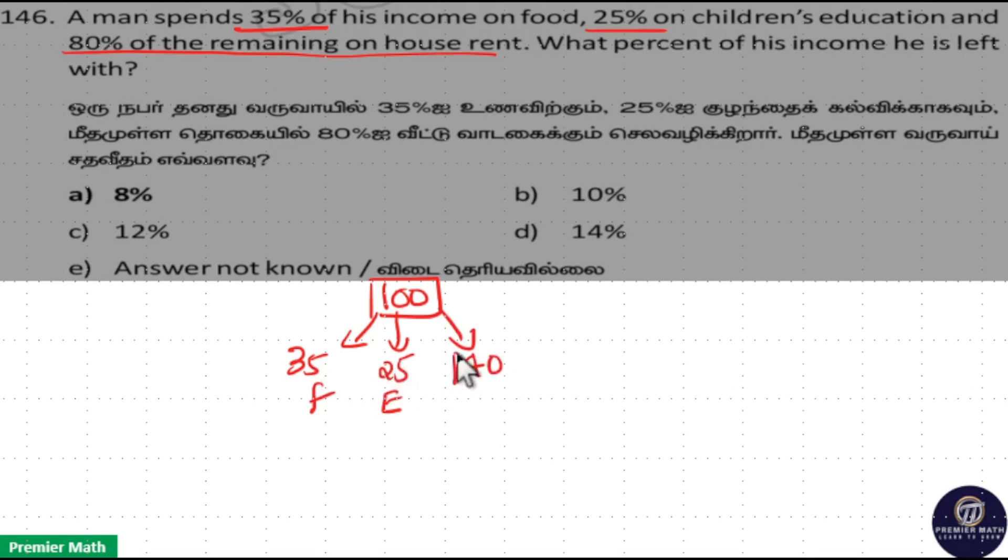Remaining is 35 plus 25 is 60, so remaining is 40 rupees. 80% of the remaining he spent on house rent, means 80% of 40 he spent on rent.